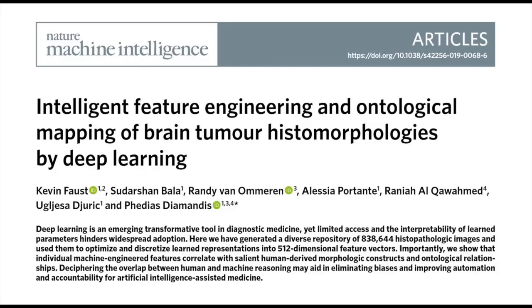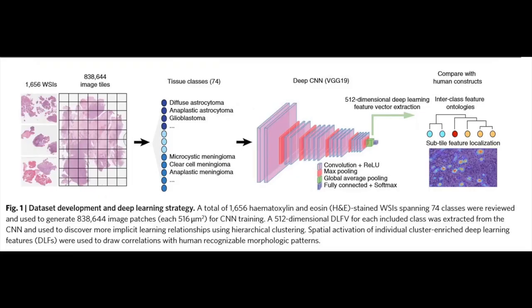One of our recent studies published in Nature Machine Intelligence took advantage of a large collection of nearly 850,000 histology images generated from over 1,000 patients with approximately 70 different types of brain tumors, to try and understand the salient features that a computer focuses on to understand and organize histology data.